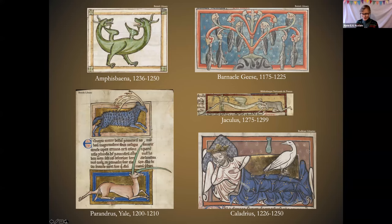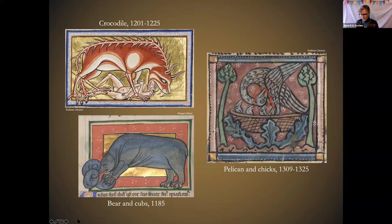The information about the fantasy creatures was obviously sheer fantasy, but even many of the real animals included information that was equally fantastical. For example, bestiaries tell us that a crocodile always weeps after eating a man, that bear cubs are born as shapeless lumps and have to be licked into shape by the mother bear, and that the pelican revives her dead chicks by piercing her own breast and letting the blood flow over them.